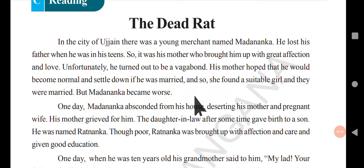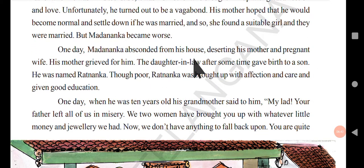His mother hoped that he would become normal and settle down if he got married — this is the idea of all mothers and relatives. When people are not behaving well, the idea of parents is to get them married. The same thing happened here. But when he was married, his lifestyle became even worse than before. One day, Mandanka absconded from his house, deserting his mother and pregnant wife.